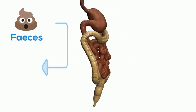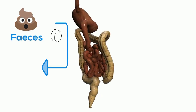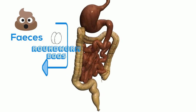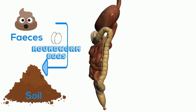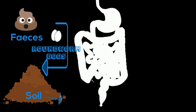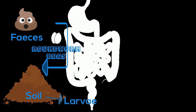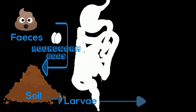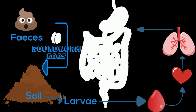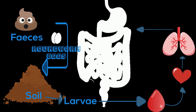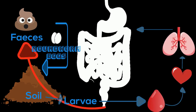The life cycle of helminths, or parasites that are worms, actually starts in poo. That's where they lay their eggs. Sometimes this poo then ends up in soil.